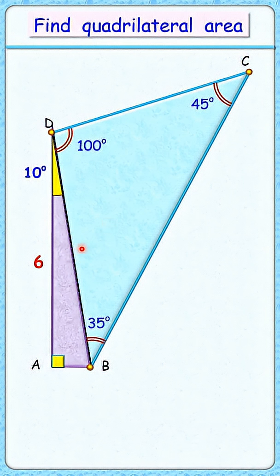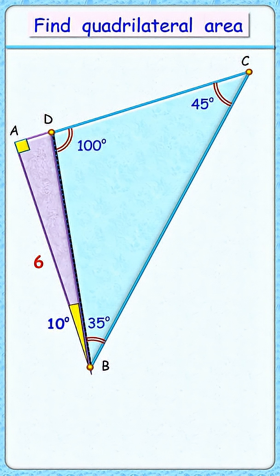Now for the magic: let's flip this purple triangle vertically upside down. Looking at the purple triangle, we have angles of 90, 10, and 80 degrees.